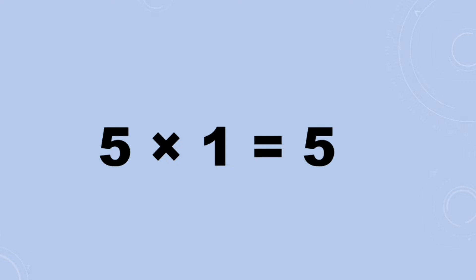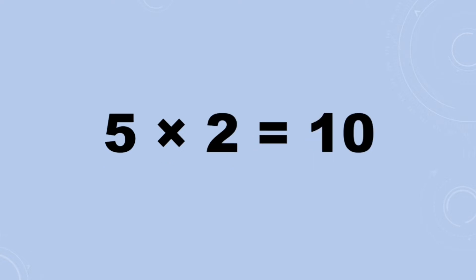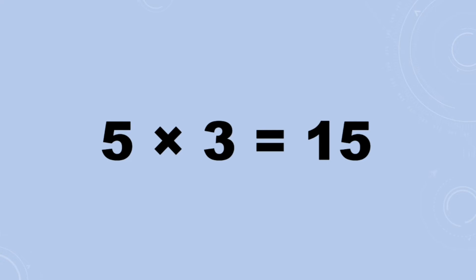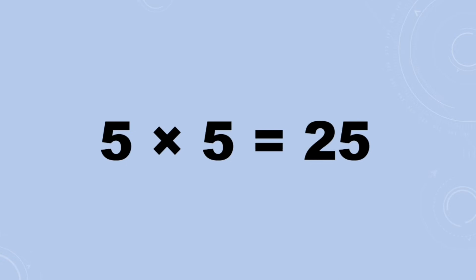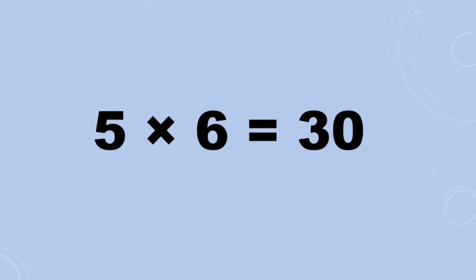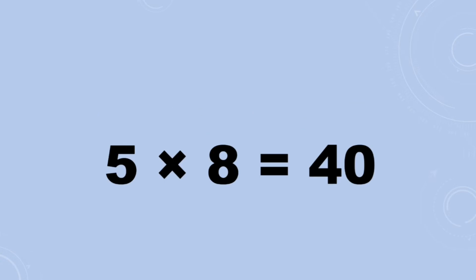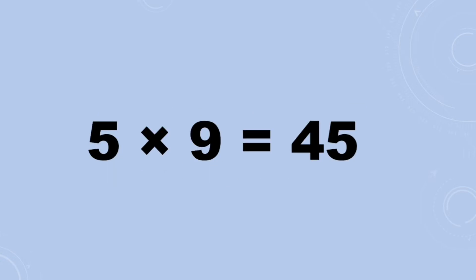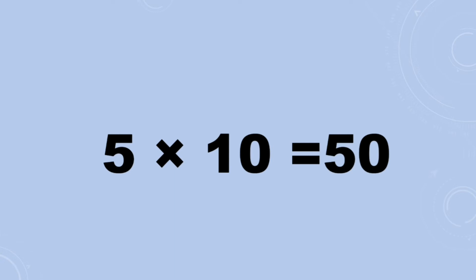Five twos are ten, five threes are fifteen, five fours are twenty, five fives are twenty-five, five sixes are thirty, five sevens are thirty-five, five eights are forty, five nines are forty-five, five tens are fifty.